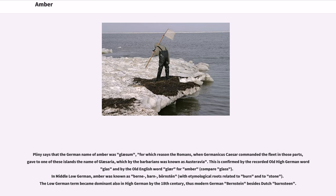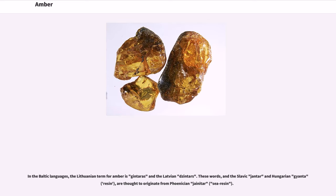This is confirmed by the recorded Old High German word glas and the Old English word glær for amber (compare glass). In Middle Low German, amber was known as burn, barn, bornsten, with etymological roots related to burn and to stone. The Low German term became dominant also in High German by the 18th century, giving modern German Bernstein and Dutch barnsteen. In the Baltic languages, the Lithuanian term for amber is gintaras and the Latvian dzintars. These words, and the Slavic gentar and Hungarian gyanta (resin), are thought to originate from Phoenician ginator (see resin).